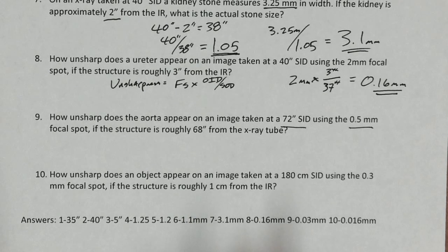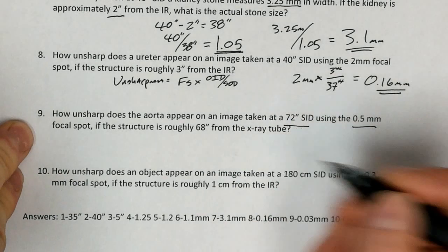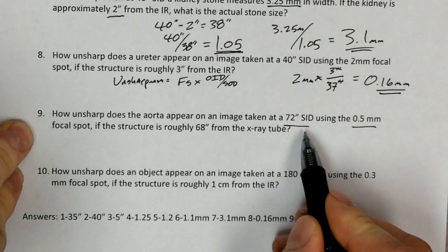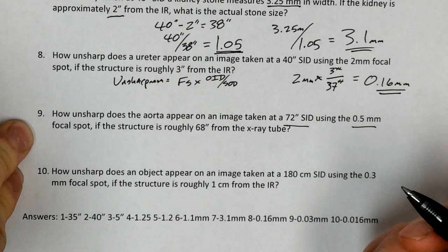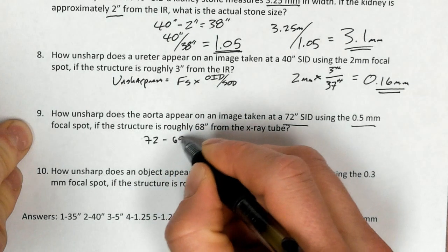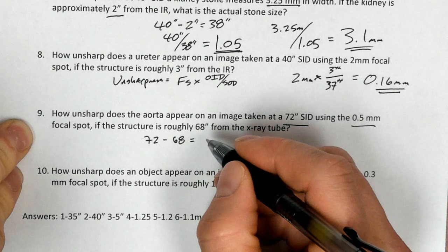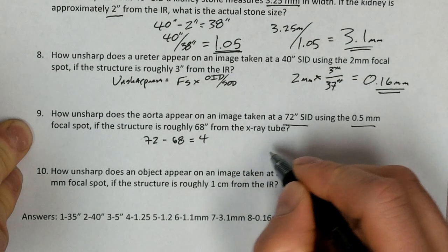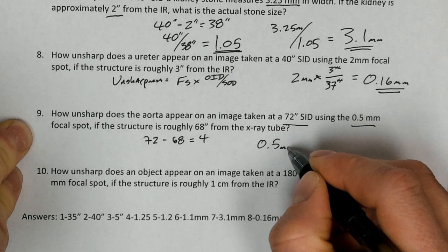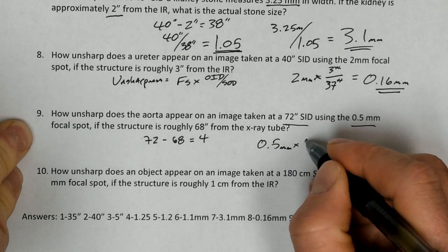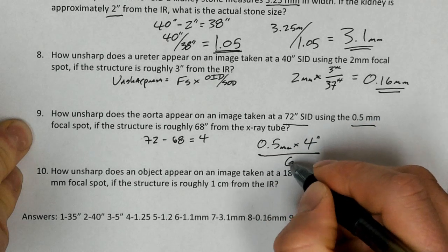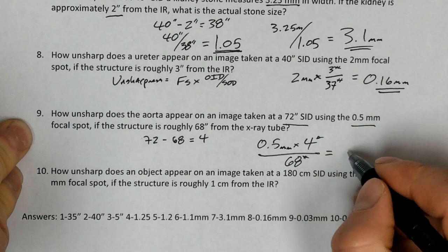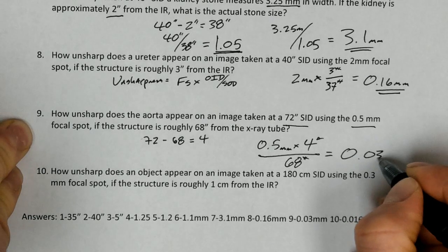So the way we'll set this one up, again, using the same formula, there's a couple of different ways we can work this. But we'll say, and they didn't give us everything that we needed. They have a SID, and they've given us a SOD here. So we'll say 72 minus 68, and that gives us 4. So the actual problem, as we should set it up here, is going to be 0.5, that's the focal spot size in millimeters, times 4, that's inches. And then we'll put that over 68 inches, and those inches will cancel out. And the end result is going to be 0.03 millimeters.